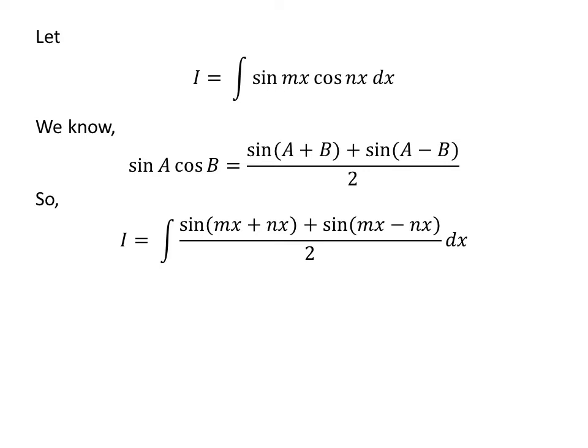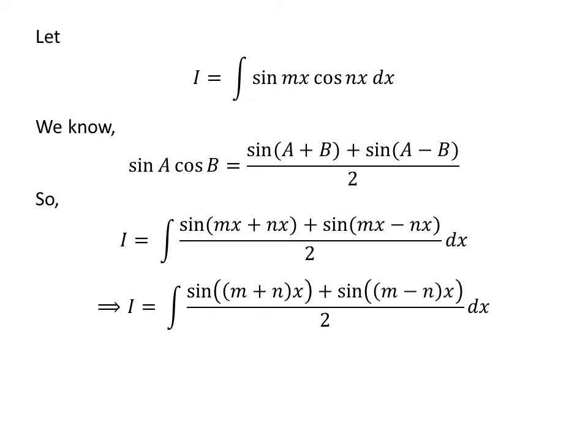I have replaced sine of m times x times cosine of n times x in the integral by its value as per the above trigonometry identity. So I is equal to the integral of sine of (m times x plus n times x) plus sine of (m times x minus n times x), upon 2, with respect to x. Taking out the common factor, we get I is equal to the integral of sine of (m plus n) times x plus sine of (m minus n) times x, upon 2, with respect to x.